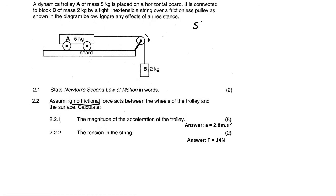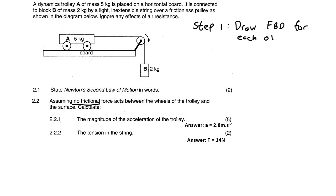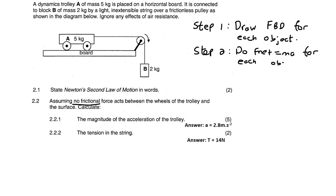And that always goes like this. Step one: we will draw a free body diagram for each object. Step two: we will do F_net equals ma for each object. And then step three: we will solve — and it's usually going to be some type of simultaneous equation.